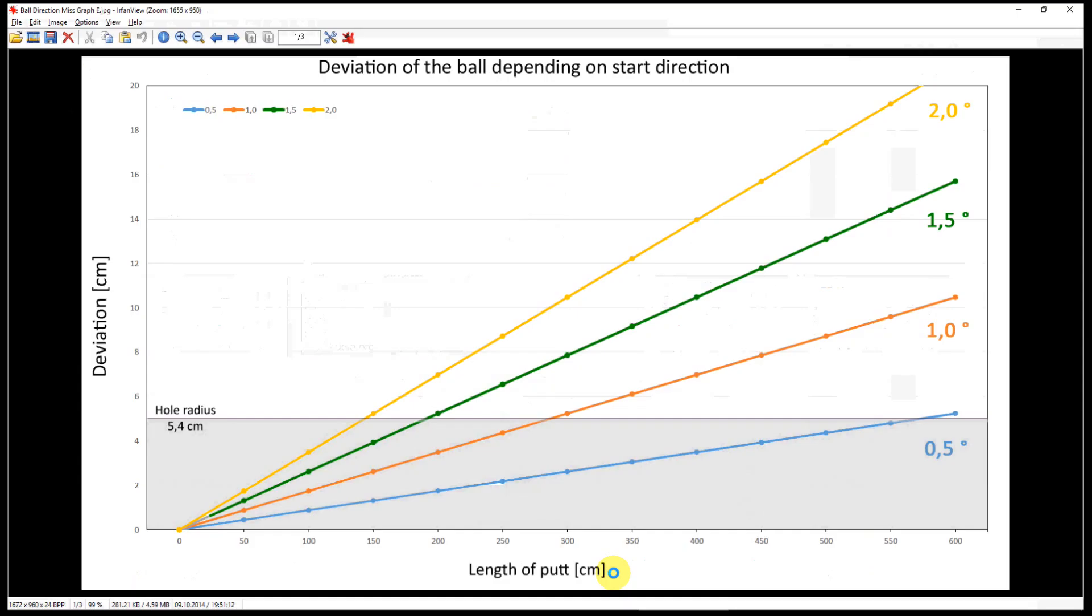If we want to better understand the consequences of a ball not starting on the line relative to the width of the hole, we can use this graph. And you see the different starting directions of the ball.